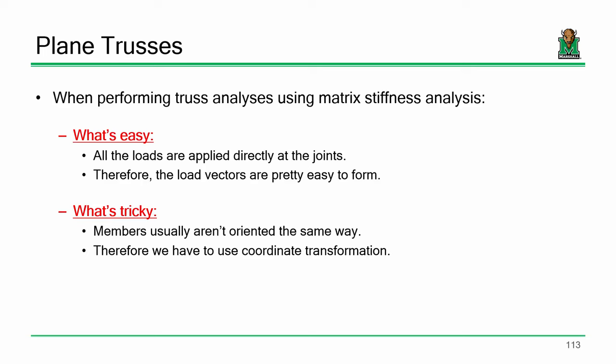One of the nice things about trusses is that the mechanics are very simple — we've already figured them out. You have a bar, you pull on it, its deflection is PL over AE. That doesn't change whether we're talking about bars or trusses. What's tricky is orientations. With trusses, we have members oriented all over the place, so we have to develop a means of coordinate transformation.